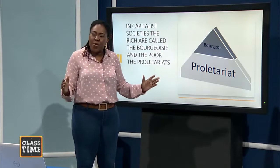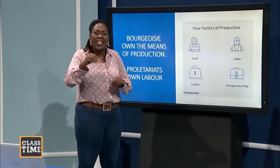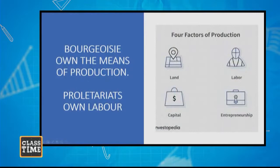According to Marx, man has to produce to live. The bourgeois own the means of production — the small rich group own land, capital, scientific know-how, entrepreneurship. They own what Marx called the means of production. Whereas the proletariats, who are the poor, the only thing they own is their labor. The poor people come with their 'too long hand,' so to speak.